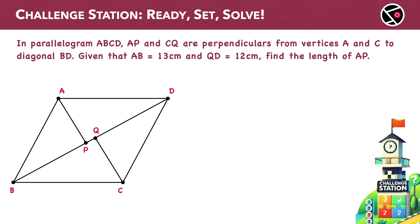Here is the problem. In parallelogram ABCD, AP and CQ are perpendiculars from vertices A and C to diagonal BD. Given that AB equals 13 centimeters and QD equals 12 centimeters, find the length of AP. Please pause the video and give it a try.